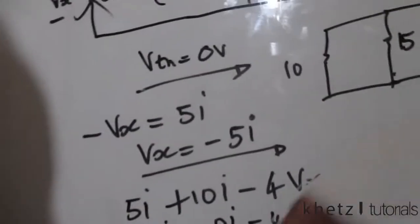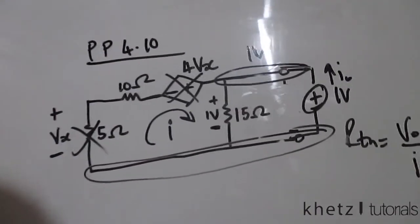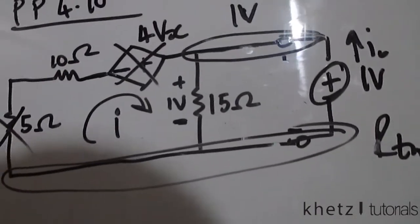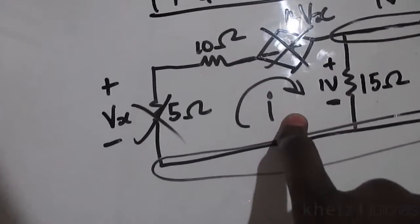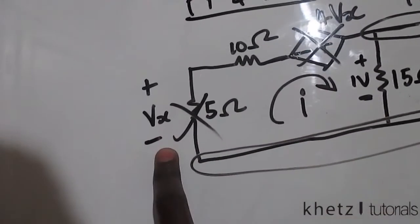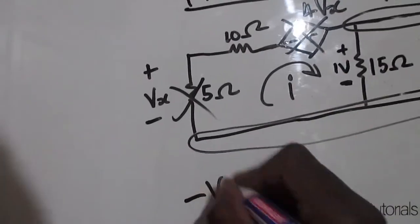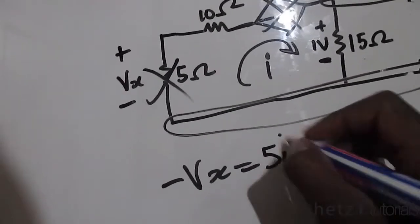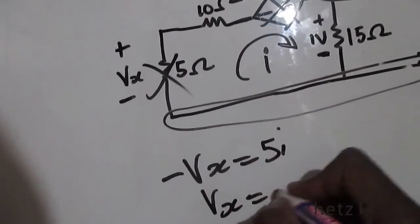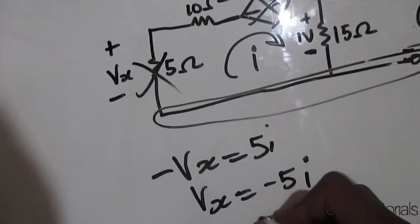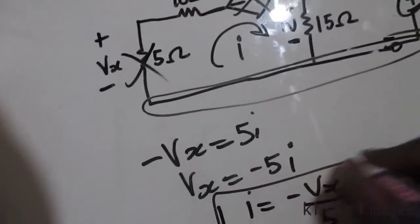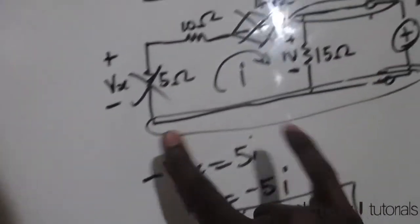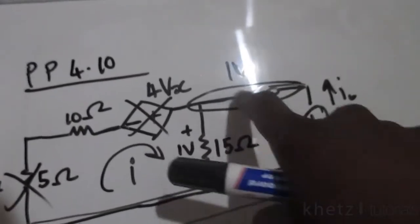Moving on to find Rth. Looking at this circuit, I've labeled a current i. Taking the relationship between i and vx — i goes through the negative of vx first — so negative vx equals 5i, which means vx equals negative 5i, and therefore i equals negative vx divided by 5.